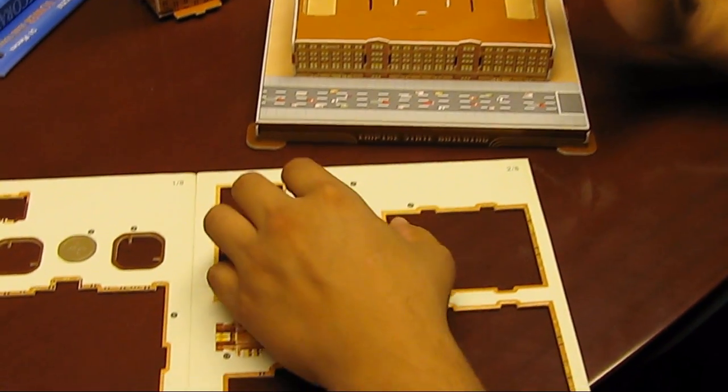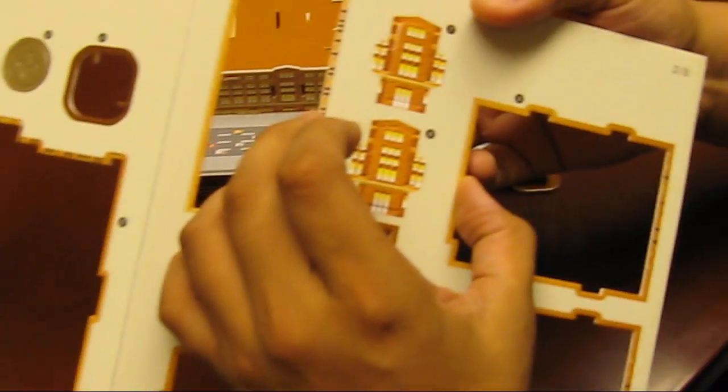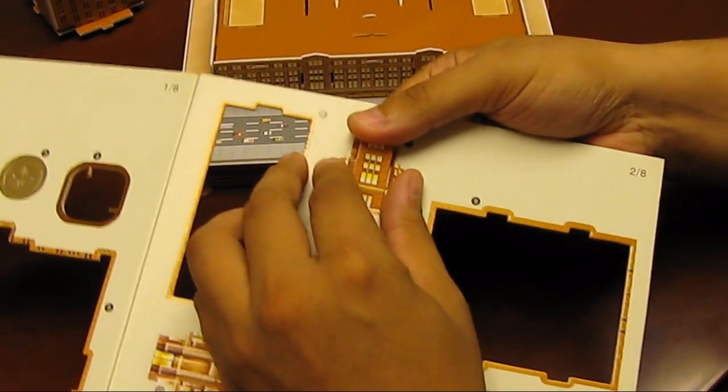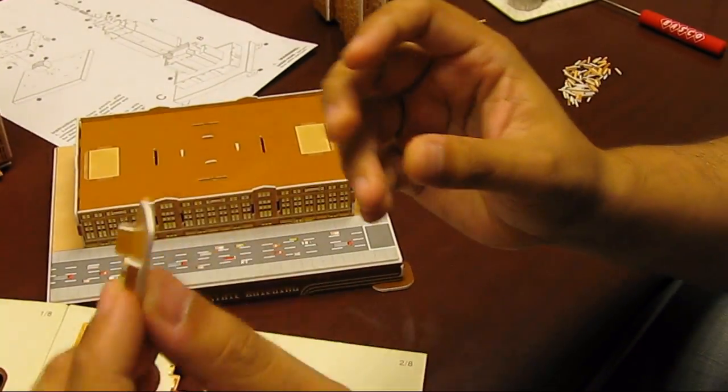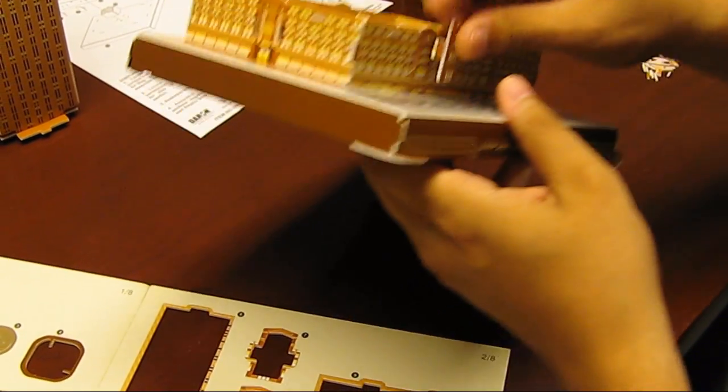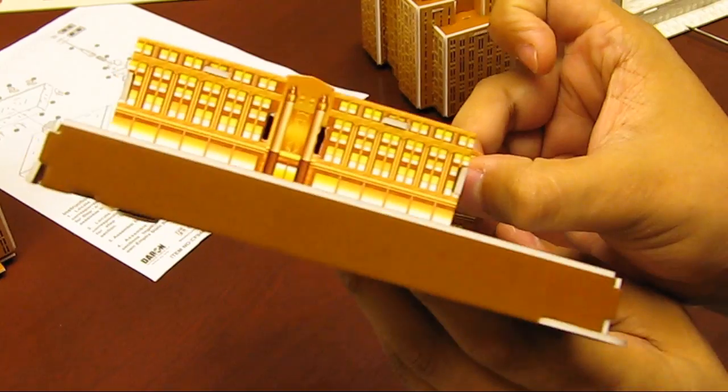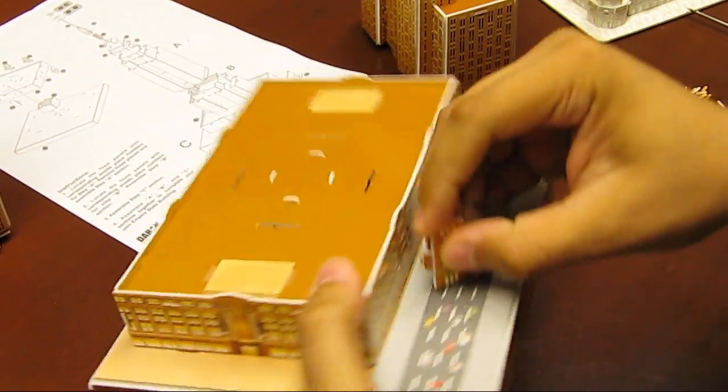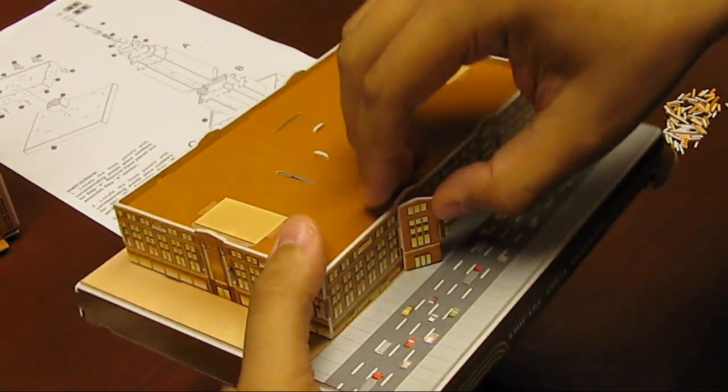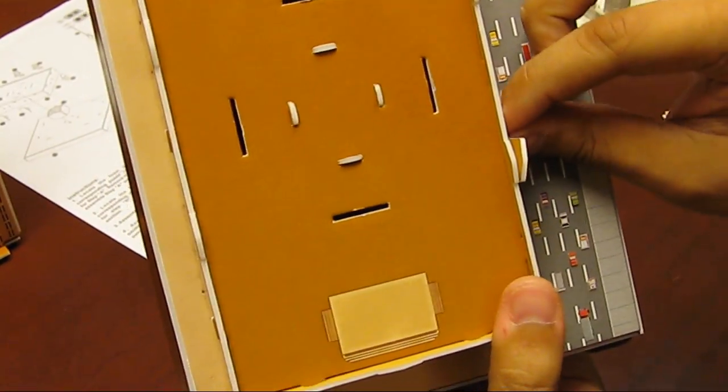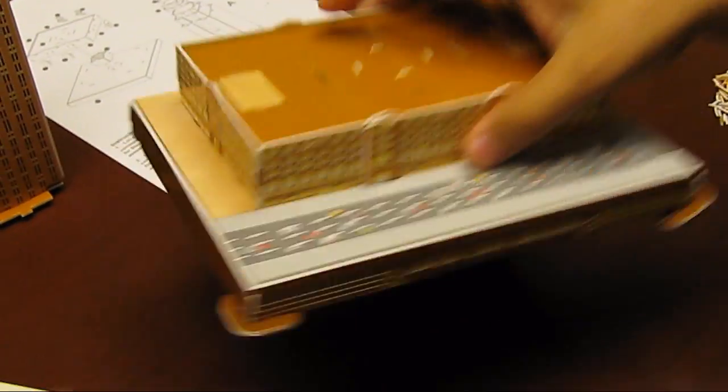And what you want to do now is take out these little window decorations that we can put on the actual 3D puzzle. You want to just place one gently in. If I can get it in. There you go. Fold it over. Fold it back. And you have a window decoration.